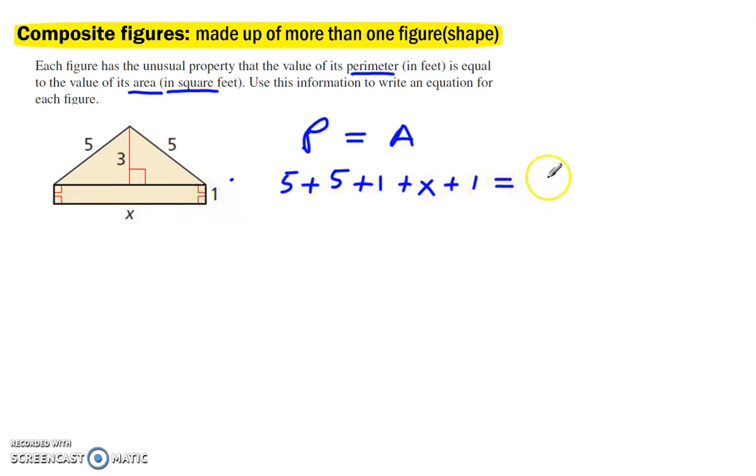So that area is x, plus the area of the triangle, is 1 half base times the height. So that is 1 half x times 3.